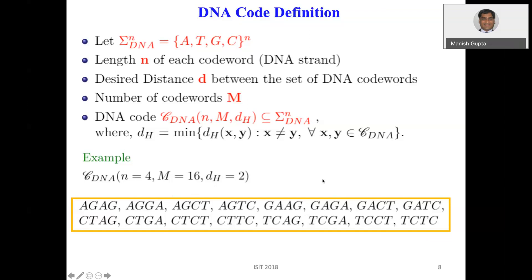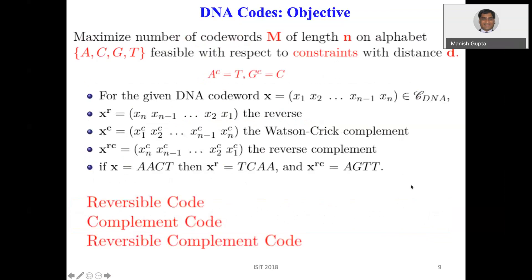The objective is to maximize the number of codewords M of length n over the alphabet {A, C, G, T}, subject to certain constraints and a given distance. Note that the complement of A is T and the complement of G is C. For a given DNA codeword x = (x1, ..., xn), we define operations: reverse of a string reverses the whole string; complement takes the bitwise Watson-Crick complement; and reverse complement takes the reverse and then the complement. For example, if x = AACT, then the reverse is TCAA and the reverse complement is AGTT.